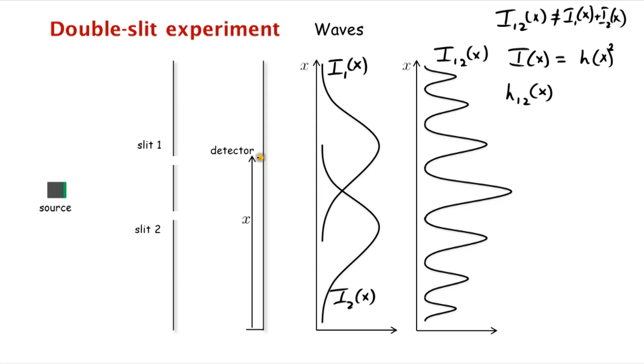And so what you have is that when both slits are open, the height of the water at x is really the sum of the height due to the wave from the first slit. So the heights add up, but the energies do not.